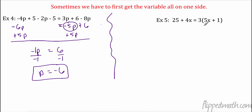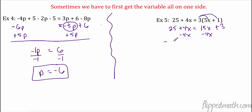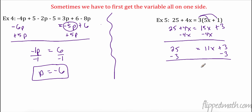So again, I'm going to distribute first. I have 25 plus 4x equals 15x plus 3. Now I'm going to combine my variables first — it doesn't matter if I move 4x over here or 15x over there. Personally, I like to move the smaller ones. The opposite of adding 4x is subtracting 4x. Now we have 25 equals 11x plus 3. The opposite of plus 3 is minus 3. If I do it on one side, I do it on the other, and I have 11x equals 22. I divide both sides by 11, and we get x equals 2.